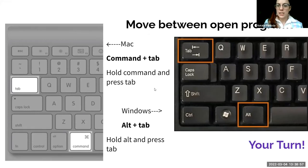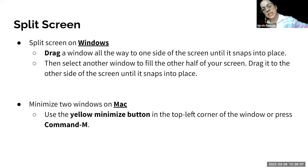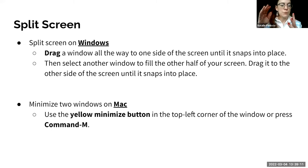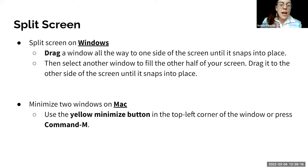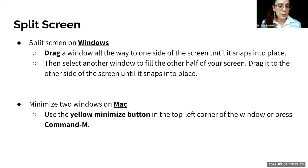Of course, you can also split your screen. On Windows, drag the window to one side and it will automatically fill — snap Zoom on one side and Google Forms on the other. On a Mac, you can minimize windows with Command+M or the yellow minimize button. Use Alt+Tab, Command+Tab, or split your screen — whatever you prefer.